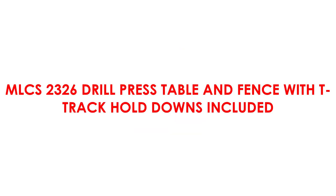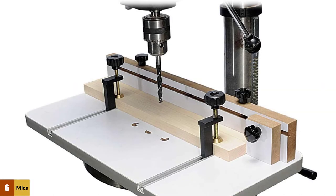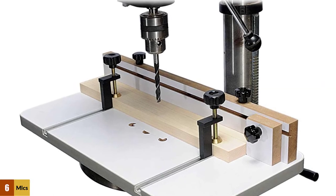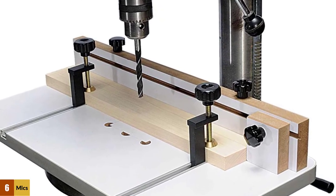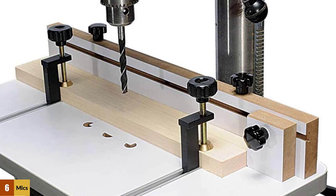At number 6, MLCS 2326 drill press table and fence with T-track hull-downs included. The MLCS 2326 drill press table is your best choice if you are looking for a lightweight and yet high-quality drilling machine. The surface of the table is made with melamine, which helps to keep the weight minimal.